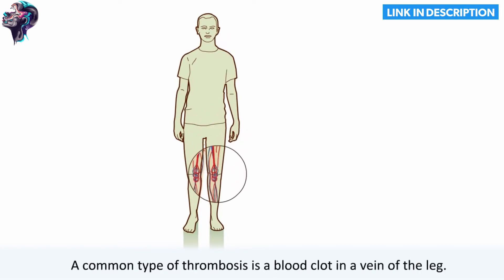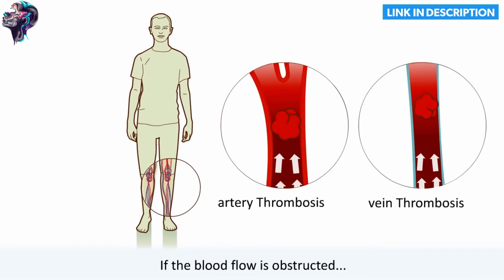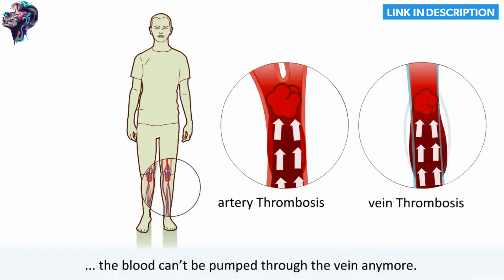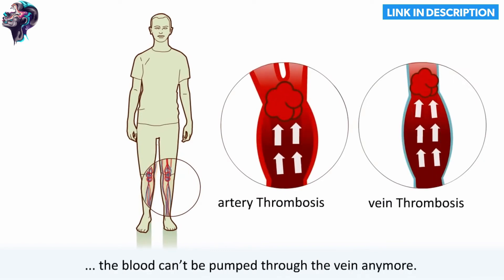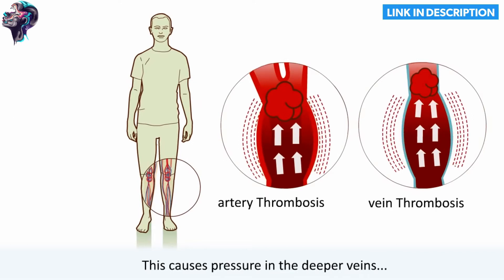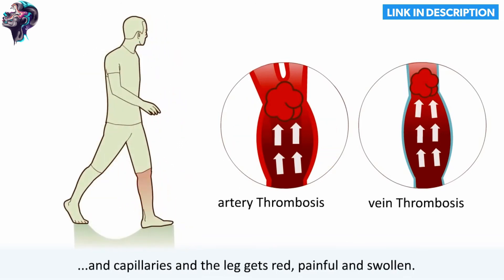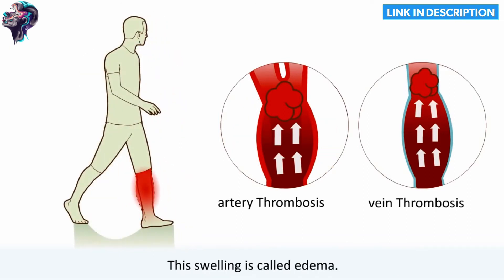A common type of thrombosis is a blood clot in a vein of the leg. We call this deep vein thrombosis. If the blood flow is obstructed, the blood can't be pumped through the vein anymore. This causes pressure in the deeper veins and capillaries, and the leg gets red, painful, and swollen. This swelling is called edema.